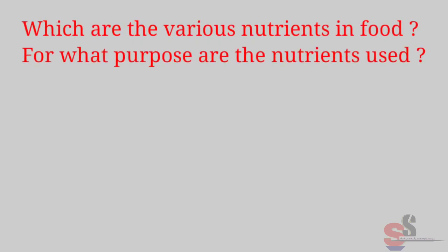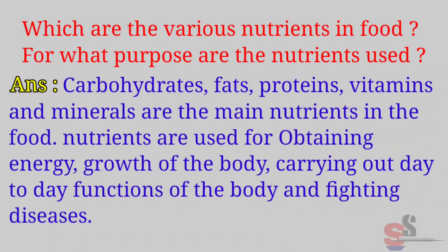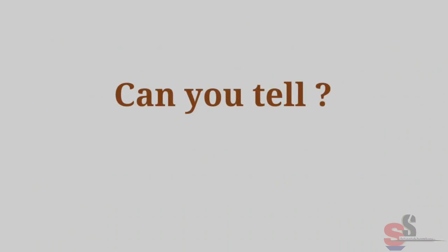Let's Recall — Textbook page 30: Which are the various nutrients in food? For what purpose are the nutrients used? Answer: Carbohydrates, fats, proteins, vitamins, and minerals are the main nutrients in food. Nutrients are used for obtaining energy, growth of the body, carrying out day-to-day functions of the body, and fighting diseases.